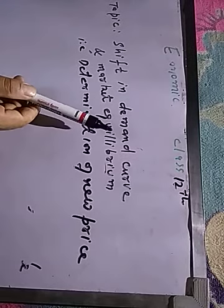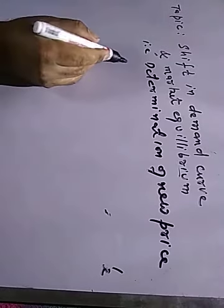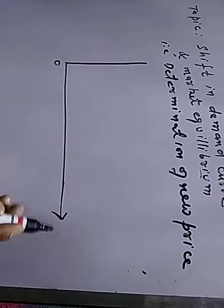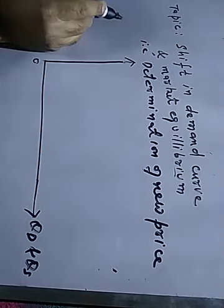Here I mean the determination of a new equilibrium price with the help of a shift in the demand curve, while the supply curve remains the same — I will not make any change in the supply curve. On the horizontal axis (x-axis) we take quantity demanded and quantity supplied of a good — QD means quantity demanded and QS means quantity supplied — and on the vertical axis we take the price of a good.